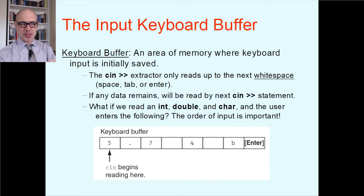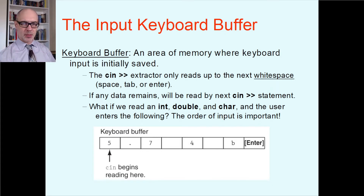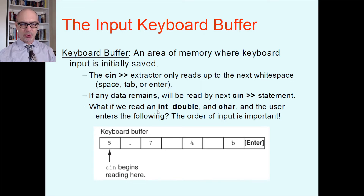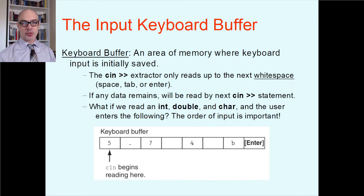Let's say the user typed in '5.7 space 4 space B' and then the enter key — all of that goes into the keyboard buffer. Then the extractor starts taking pieces out. The first cin statement wants to pull out an int. Starting from the left, there's a 5 — that's an integer — then there's a decimal point. Integers don't have points, so that first cin statement stops there and pulls out 5. The first thing that comes out is 5.